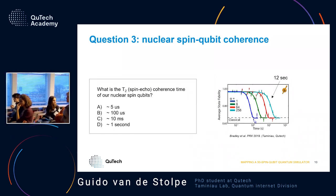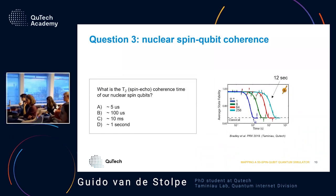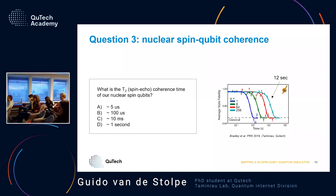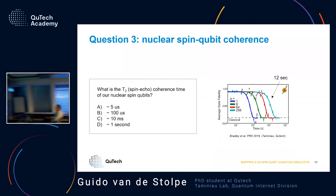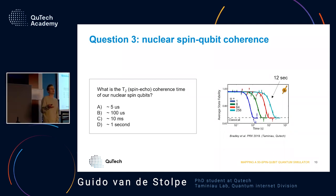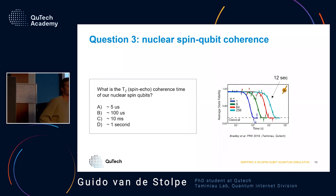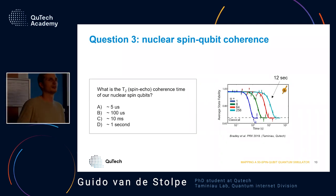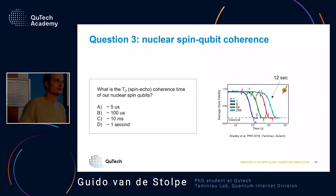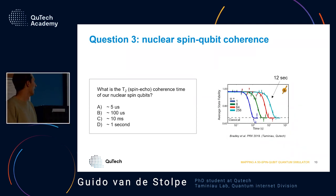The gate time is about one millisecond, but that's mainly because we're limited by heating in our system. If you put in more power you can do it much faster, but typically about one millisecond in our experiments.